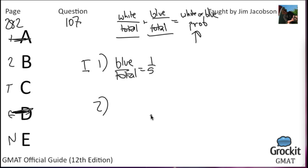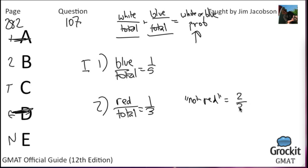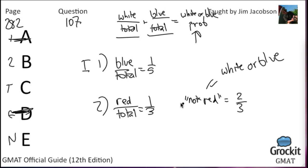Statement 2 says P(red) equals 1/3. Since there are only three colors, P(not red) equals 1 minus 1/3 equals 2/3. And since not red means white or blue, P(white or blue) equals 2/3. By giving us the probability of red, statement 2 inadvertently gives us the probability of white or blue. Statement 2 is sufficient; the answer is B.